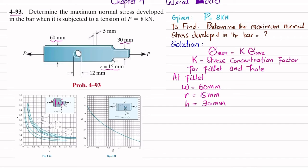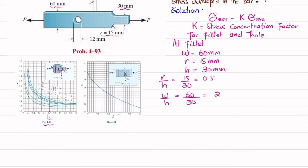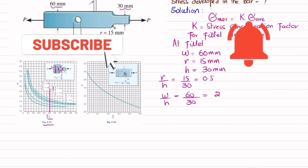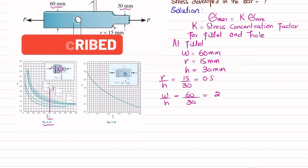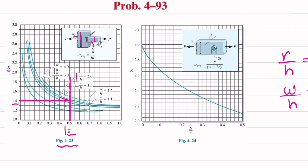Using Figure 4-23 for the fillet, we calculate r/h = 15/30 = 0.5, and w/h = 60/30 = 2. Locating r/h = 0.5 on the horizontal axis and drawing a vertical line, it intersects the curve for w/h = 2. Drawing a horizontal line from that intersection to the y-axis gives a stress concentration factor k = 1.4.